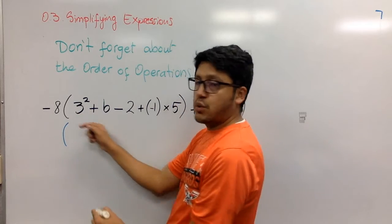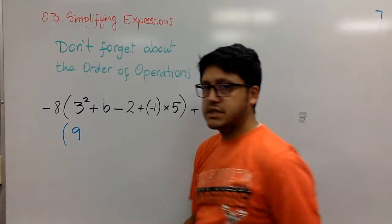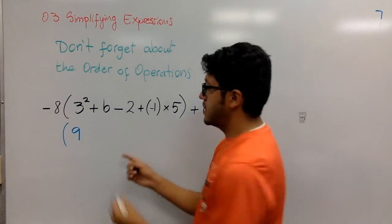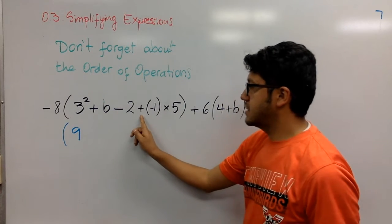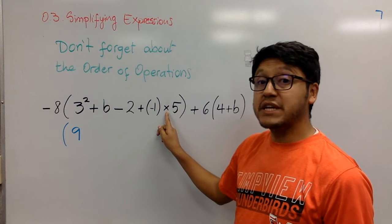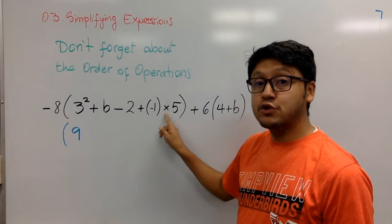This is 3 squared is 9, because it's 3 times 3. Now, you have a plus, you have a minus, you have a plus. You have a multiplication here. So we have to do this one first.